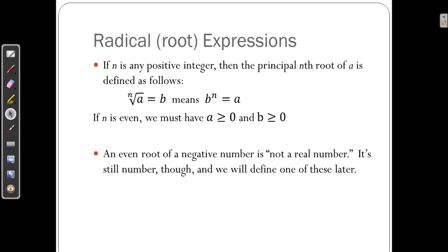Radical or root expressions. If you have a positive integer n, that's called the index of the root, then the principal nth root of a is defined. The nth root of a equals b means that b to the n equals a. We know the square root of 4 equals 2, because 2 squared equals 4. Similarly, the third root of 27 equals 3, because 3 raised to the third power equals 27.